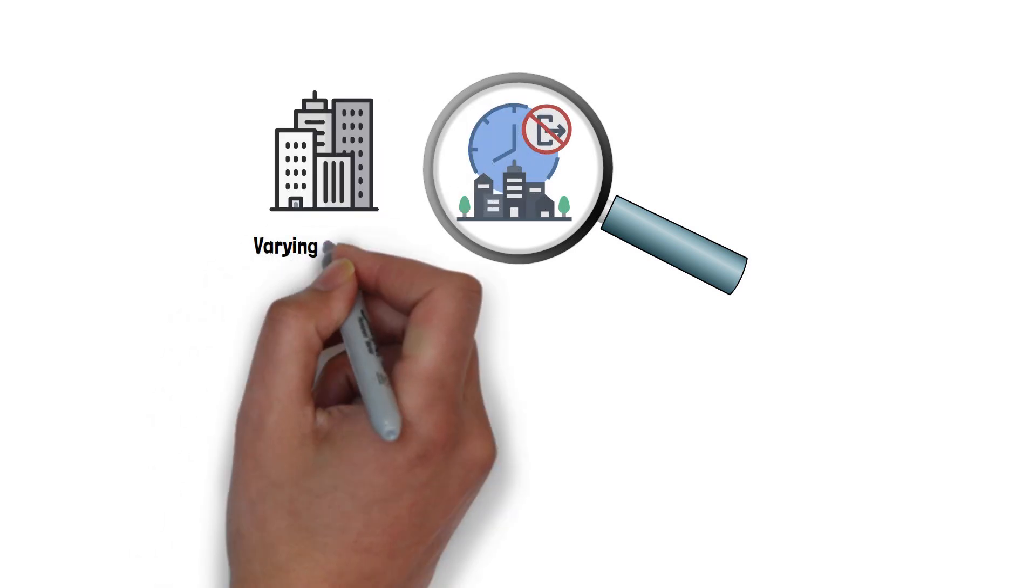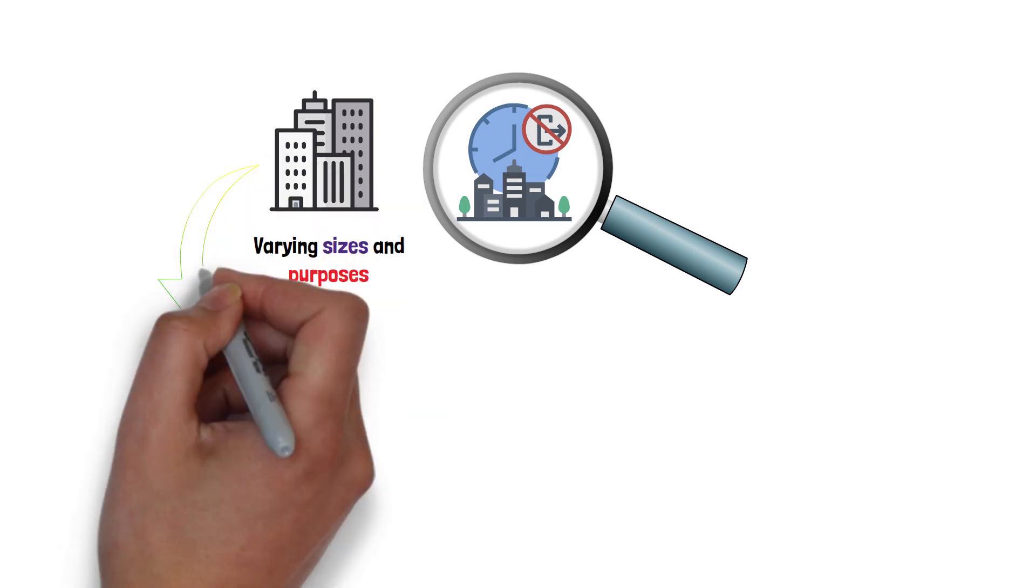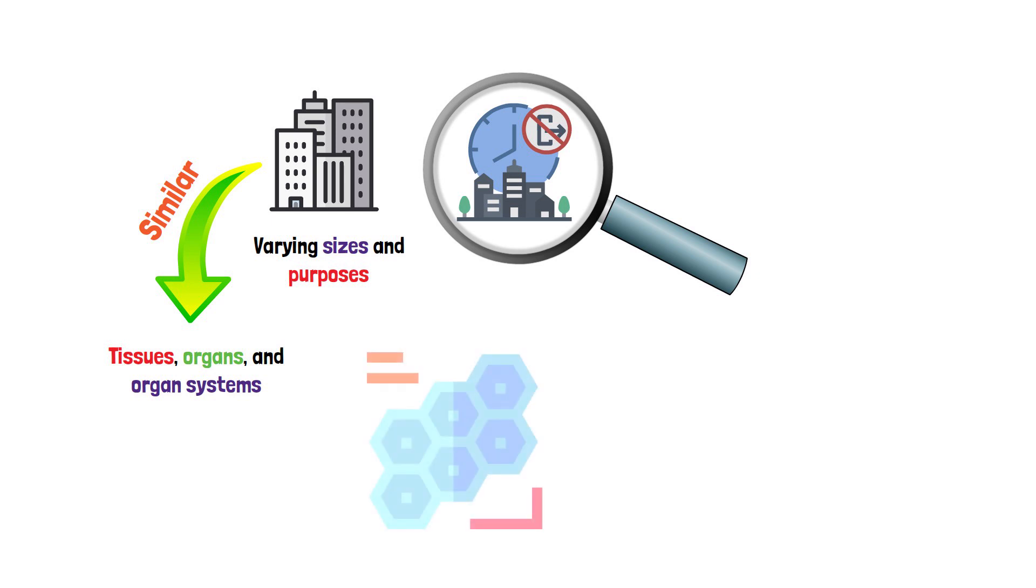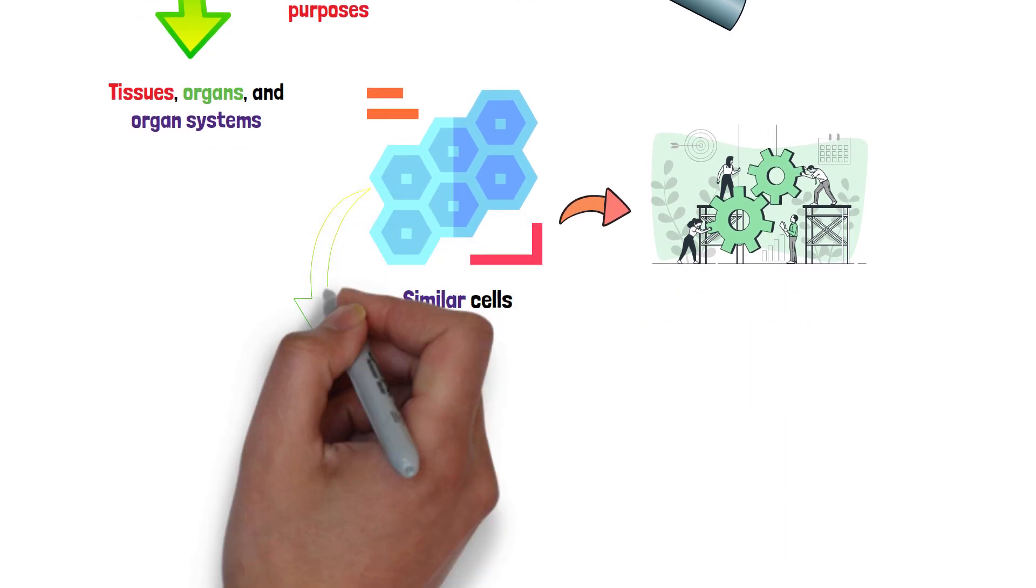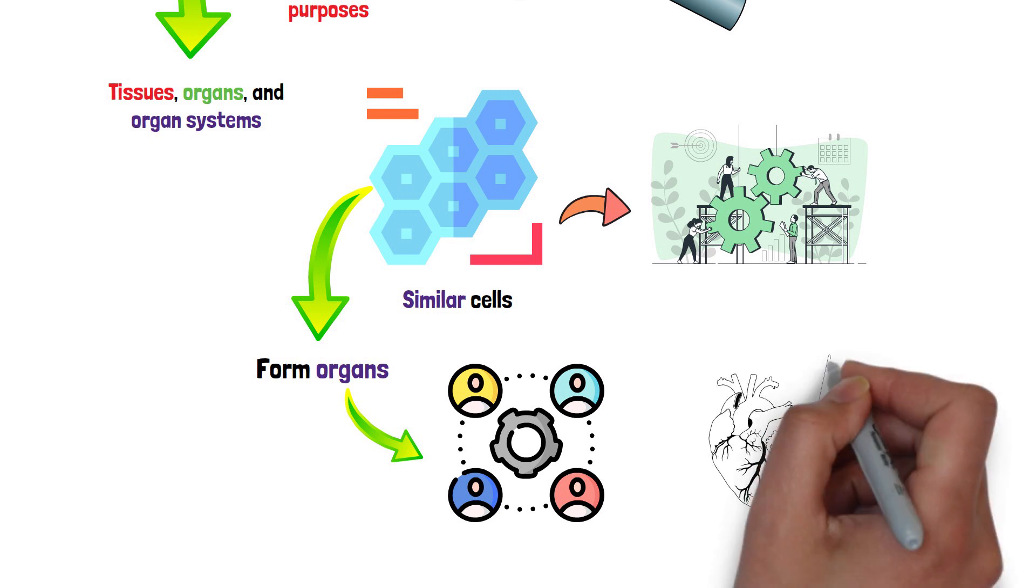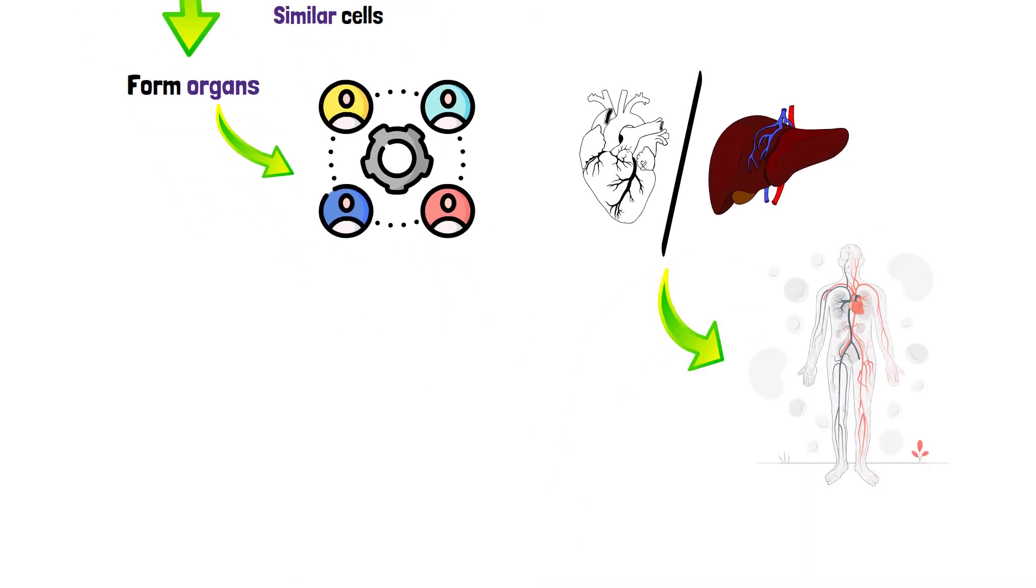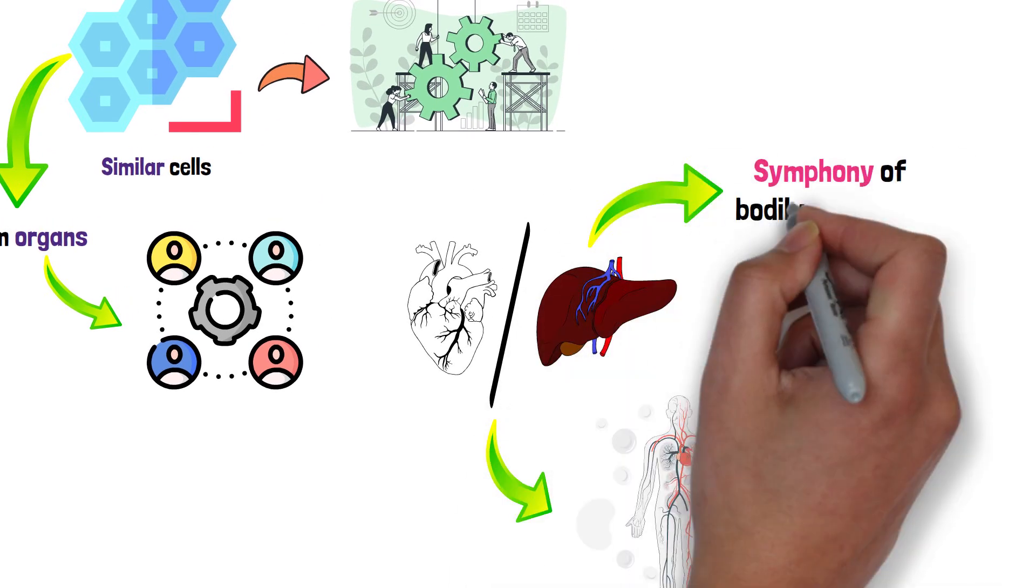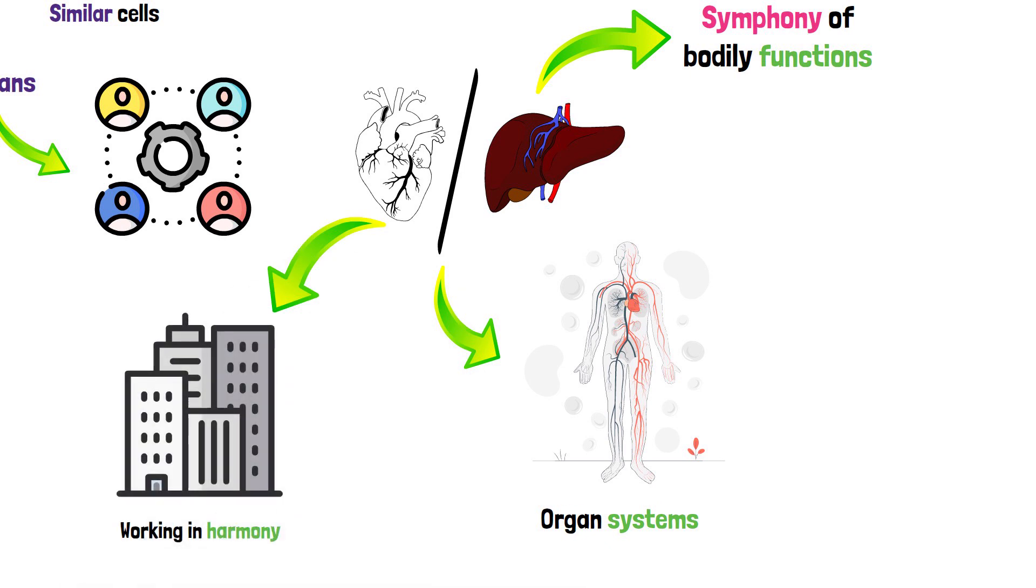Now, when you dive deeper into this city, you'll find it's made up of buildings and structures of varying sizes and purposes. This is similar to how tissues, organs, and organ systems make up our bodies. Tissues are groups of similar cells that work together like a team. They come together to form organs, each like a specialized center with a unique role, such as the heart or liver. These organs collaborate within organ systems, each playing a crucial part in the symphony of bodily functions, much like different departments in a city working in harmony.